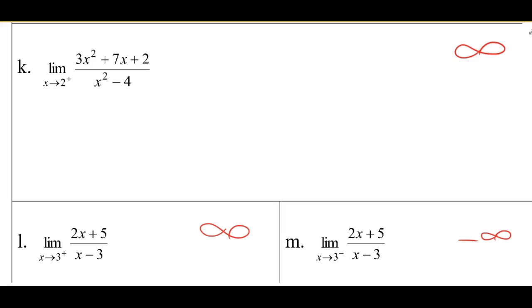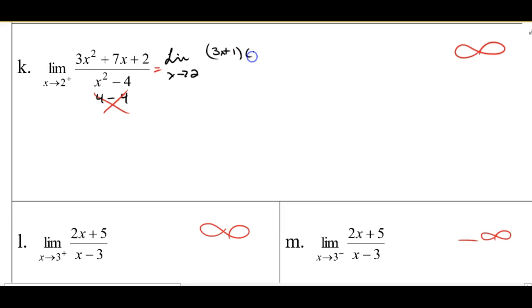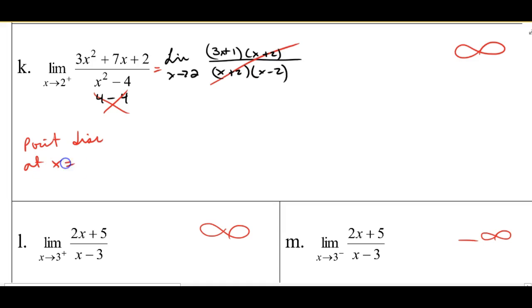For K, if I try plugging 2 in: 2 squared is 4, minus 4 is 0 — problems in the denominator right away. Let's try factoring. When I factor this function, I get the limit as X approaches 2 of (3X plus 1)(X plus 2) over (X plus 2)(X minus 2). I check and I have X plus 2's that cancel — so I have a removable point discontinuity at X equals negative 2. But I could still get 0 in the denominator: 2 minus 2 is 0. I'm left with (3X plus 1) over (X minus 2).